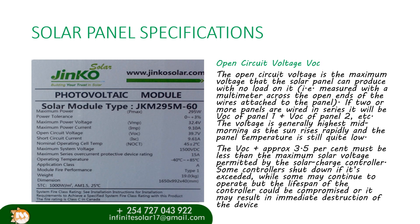When the panels are connected in parallel, it's a different case which we shall discuss later. When doing designs, the voltage is generally highest in the mid-morning as the sun rises and when temperatures are low. The VOC plus approximately 3.5 percent must be less than the maximum solar voltage permitted by the solar charge controller. If you exceed this, some charge controllers will shut down, while others may continue to operate but the lifespan of that charge controller will be compromised.